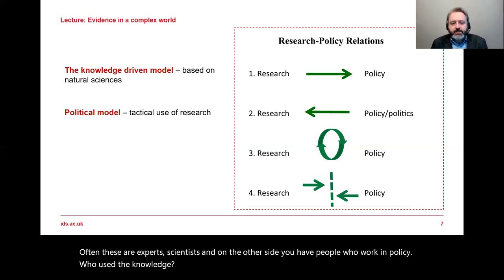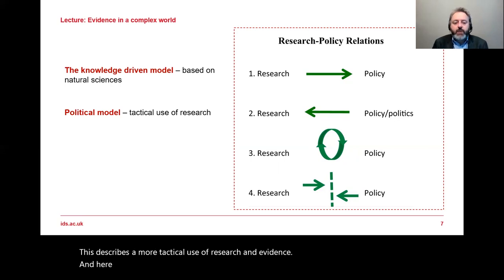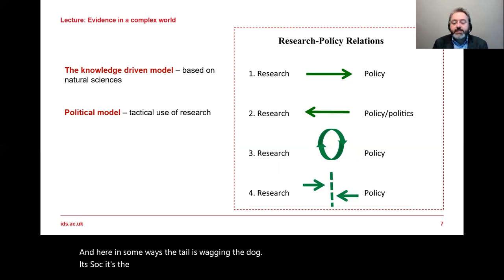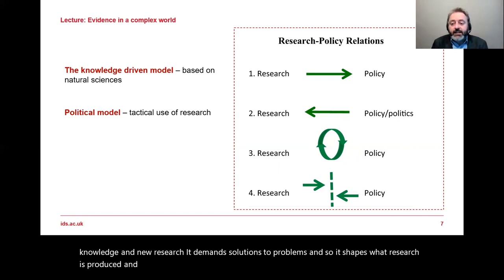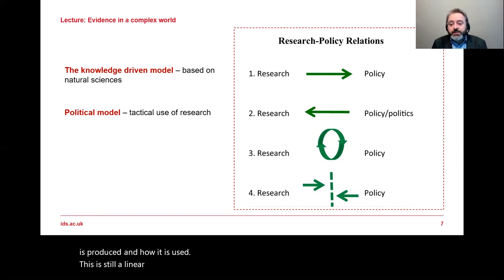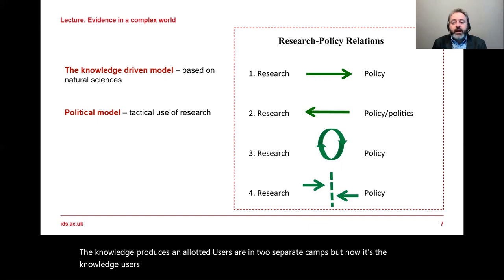We then have the political model, which describes a more tactical use of research and evidence. Here, in some ways, the tail is wagging the dog. It's society, the policymakers and the political process, which generates a demand for new knowledge and research — it demands solutions to problems, and so shapes what research is produced and how it is used. This is still a linear relationship, but now it's the knowledge users shaping the research agenda rather than the other way around.